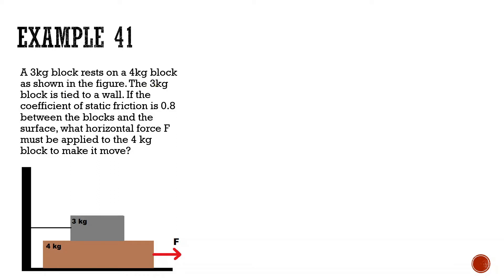Let's look at the next problem. A three kilogram block rests on a four kilogram block. The three kilogram block is tied to a wall. If the coefficient of static friction is 0.8 between the blocks and the surface, what horizontal force F must be applied to the four kilogram block to make it move? Again, we want to start by drawing a free body diagram.